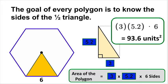The goal for every polygon is to find the two half-triangle dimensions — the half-base and the height of the wedge piece. Multiply those two values together to get the area of one wedge piece, then multiply by the number of sides to get the total area of the polygon.